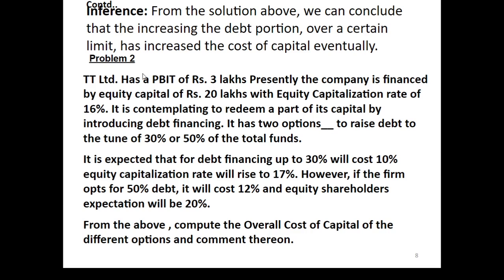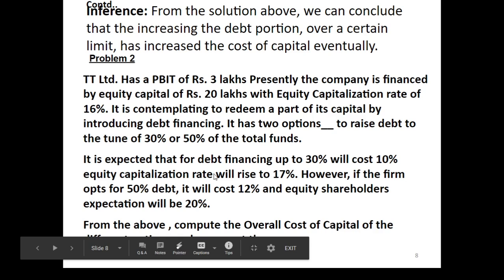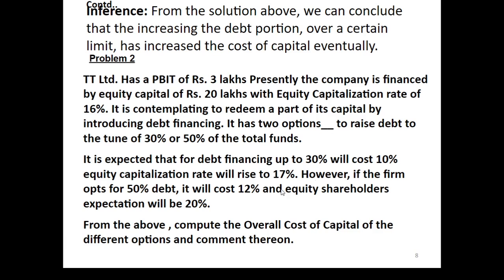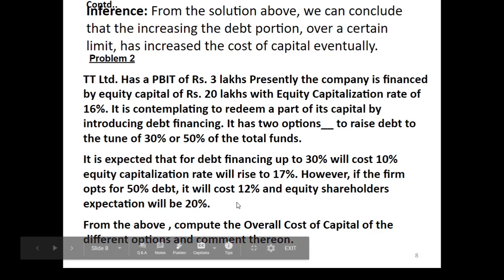Let us discuss Problem 2. TT Limited has a PBIT of 3 lakh rupees. Presently the company is financed by equity capital of 20 lakhs with an equity capitalization rate of 16%. It is contemplating redeeming part of its capital by introducing debt financing. It has two options: to raise debt to 30% or 50% of total funds. For 30% debt financing, it will cost 10% and equity capitalization rate will rise to 17%. If the firm opts for 50% debt, it will cost 12% and equity shareholders' expectations will rise to 20%. Compute the overall cost of capital of the firm.